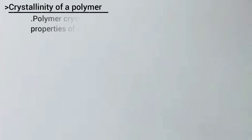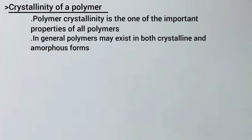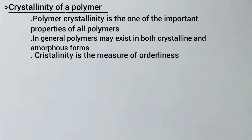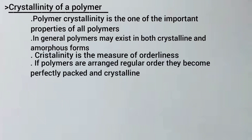First, we talk about the crystallinity of polymers. Crystallinity is one of the important properties of polymers. In general, polymers may exist in both crystalline and amorphous forms. As we see these pictures, we can see the crystalline, polycrystalline, and amorphous forms of the polymers. The crystallinity is measured in ordered lines. If polymers are arranged in regular order, they become perfectly packed and crystalline.